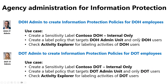Now that the agency admins have the necessary permissions, let's see how they can start managing information protection policies for their own agencies. Each department wants to create a sensitivity label available for their agency users so they can classify and protect their agency's data. The DOH admin will create a sensitivity label called 'Contoso DOH Internal Only' for users in the DOH admin unit. This sensitivity label will be applied by users to files and emails and will apply rights management such that only DOH users can access the labeled files and emails. Once the labels are in use, the DOH admin can check the Activity Explorer for labeling activities.